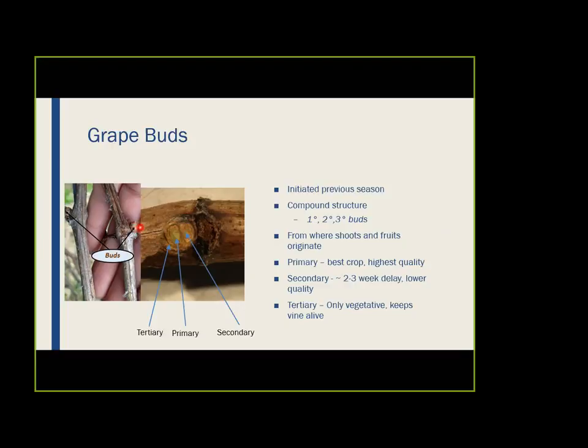This big fat one in the center is the primary bud, and that's really what's going to give you the best crop — it'll produce the highest quality grapes. If something happens to that bud through disease, insect injury, or frost, you have two other buds. You have a secondary bud, which is a little bit smaller. It'll still give you a crop, still be quality, just not as high as from the primary bud. Typically you'll see about a two to three week delay in maturity development because it takes longer for that bud to emerge and for the flowers to come out, so everything gets delayed.